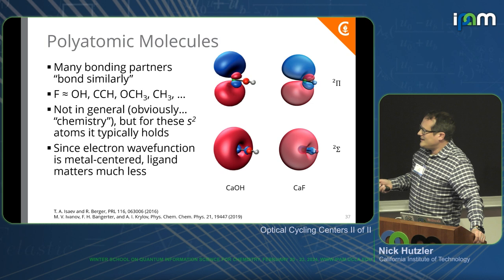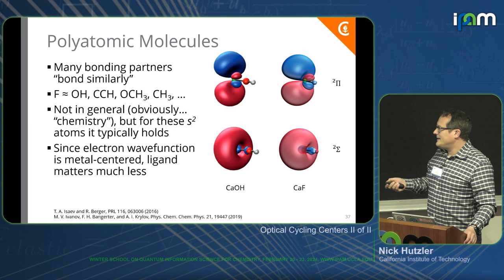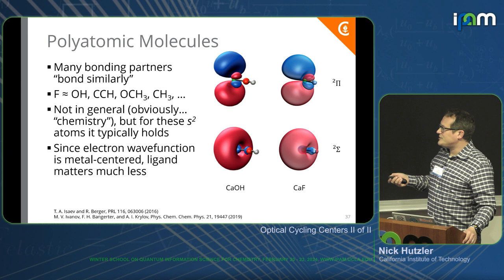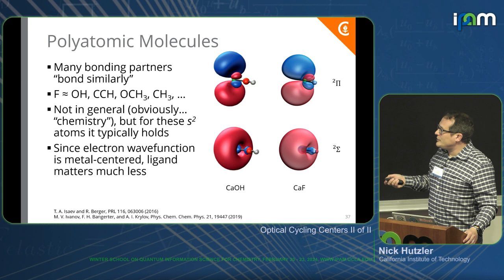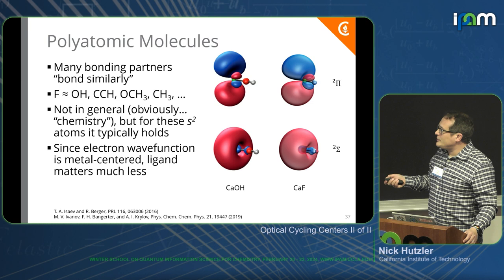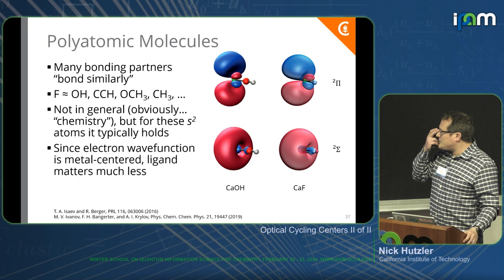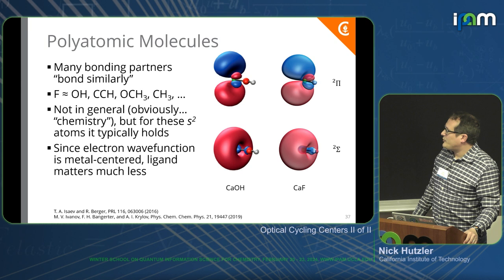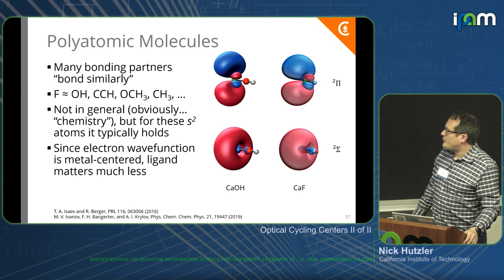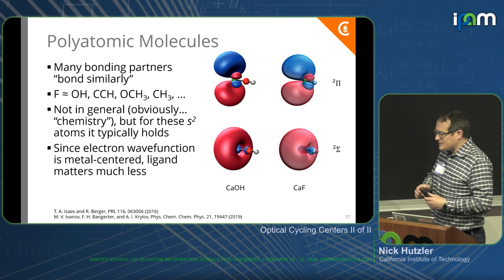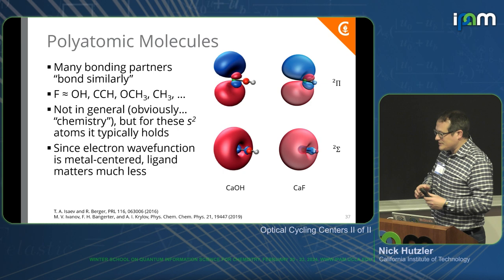Many bonding partners bond similarly. Fluorine bonds for these types of molecules very much like CCH, OCH3, OH, or CH3. This is obviously not in general true — it's a very physicist's view of chemistry, like 'OH is basically fluorine.' That's not generally true, but for these particular types of molecules it actually is very true. They bond very similarly, because the electron wave function is metal-centered and polarized away from the bond, making it much less sensitive to the properties of the bond. So ab initio calculations of CaF versus CaOH look pretty similar — the electronic wave functions look pretty similar.